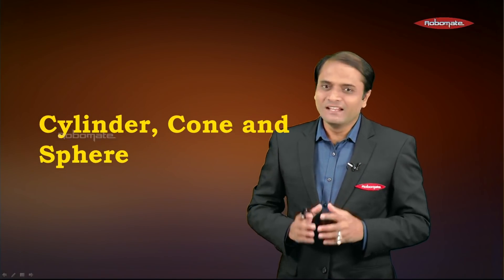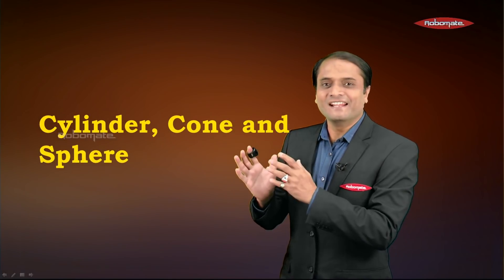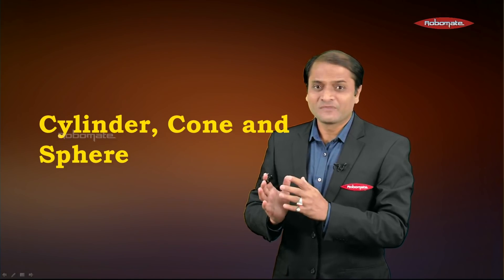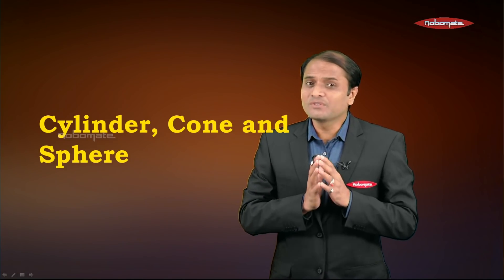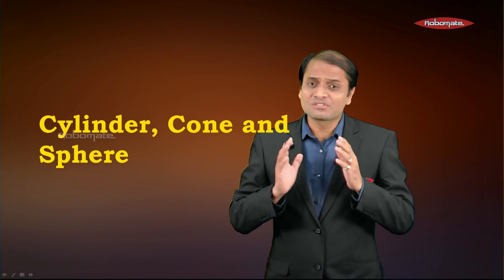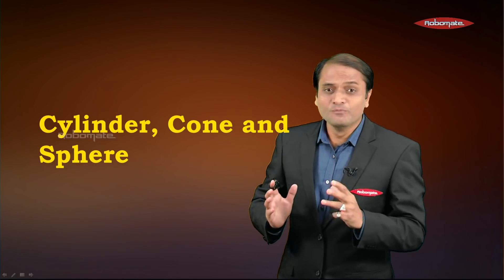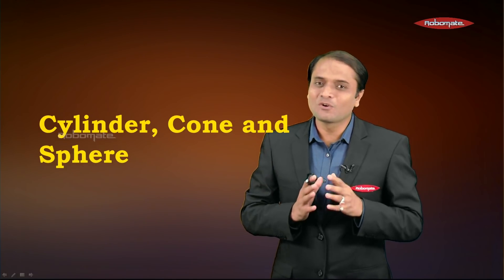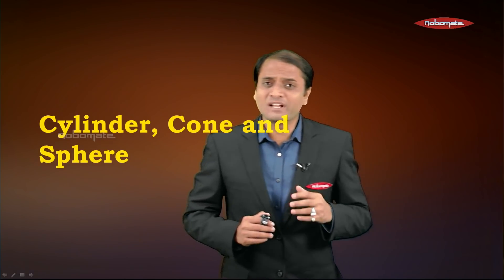Hello friends, let us start with the chapter Cylinder, Cone and Sphere. In this chapter we are going to study the surface area and volume of these three objects — cylinder, cone and sphere. So let us get started.